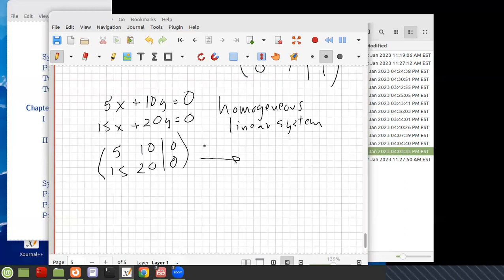So I could then do minus 3 row 1 plus row 2: 5, 10, 0, 0. And it would be 0 there and minus 10. And then here, y would equal 0. And since y is 0, x equals 0. Now, that illustrates a point.